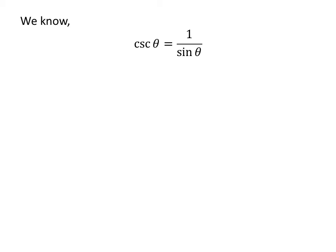We know cosecant of theta is equal to 1 upon sine of theta. So, cosecant of half of pi plus x is equal to 1 upon sine of half of pi plus x.